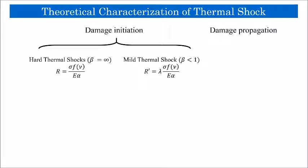Here are two important damage initiation indices: R index for hard shock scenarios where the Biot number or beta is very large, and R prime index for mild shock scenarios where the Biot number is very small. Also, R triple prime is one of the indices designed to capture damage propagation.